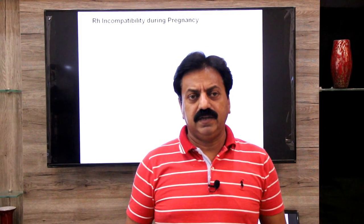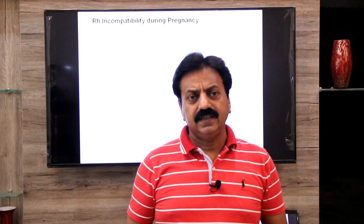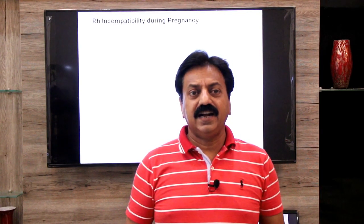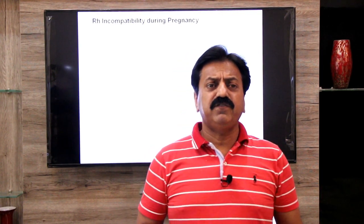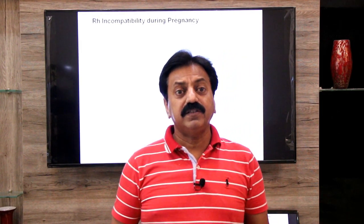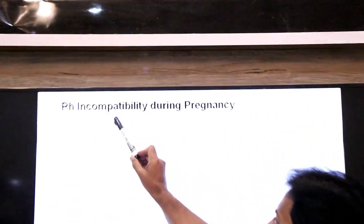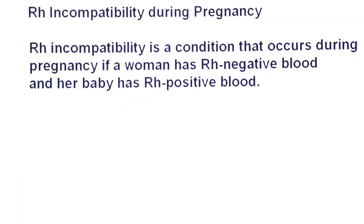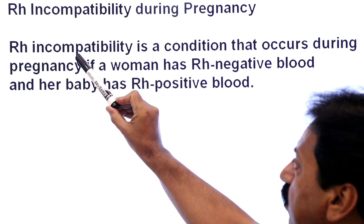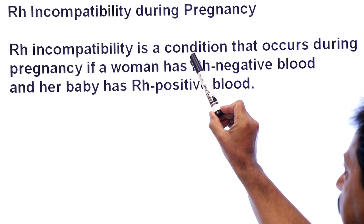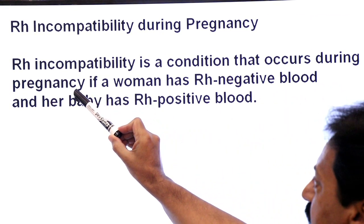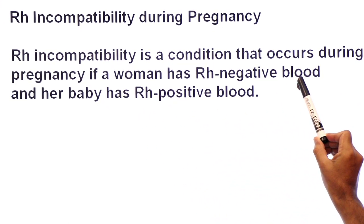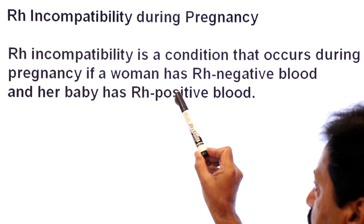First of all, let's define what RH incompatibility is. RH incompatibility is a condition that occurs during pregnancy if a woman has RH negative blood and her baby has RH positive blood.